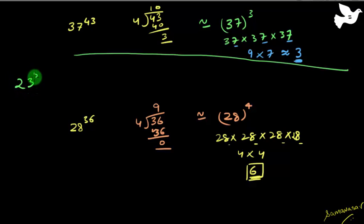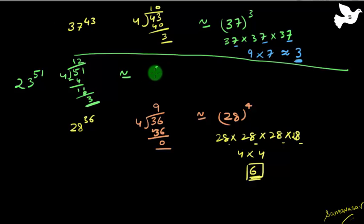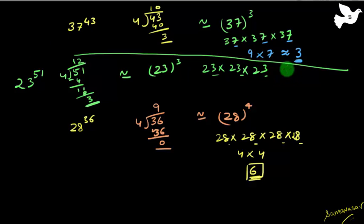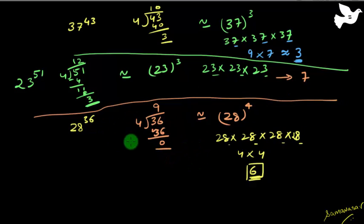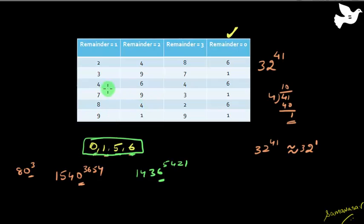Let's take one more example: 23 raised to the power 51. 51 divided by 4 gives remainder 3. So the unit digit is the same as 23^3, which is 23 x 23 x 23. Taking last digits: 3 x 3 is 9, 9 x 3 is 27 — unit digit is 7. To summarize: divide the exponent by 4, use the remainder to find the unit digit. If the remainder is 0, use power 4. This rule applies when the unit digit is 2, 3, 4, 7, 8, or 9. For unit digits 0, 1, 5, and 6, the unit digit always stays the same.